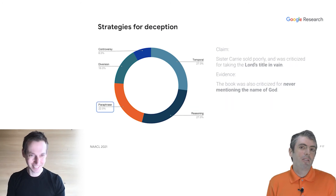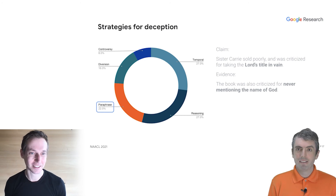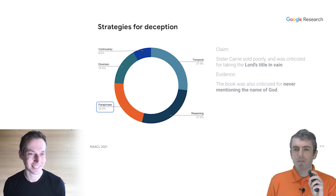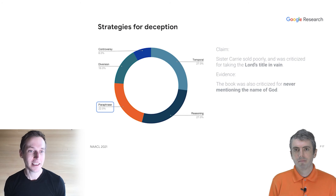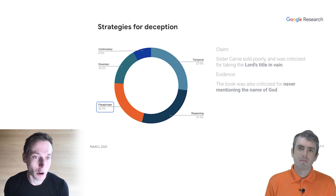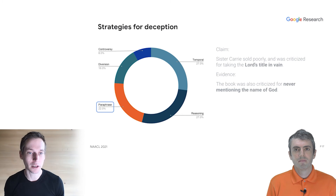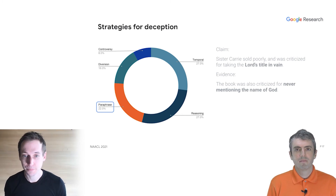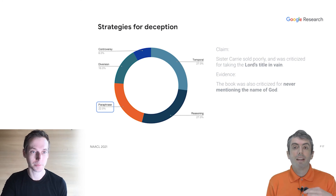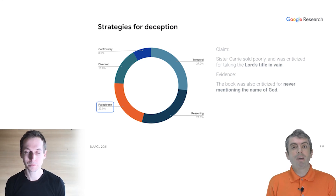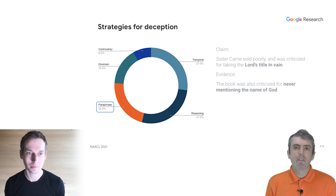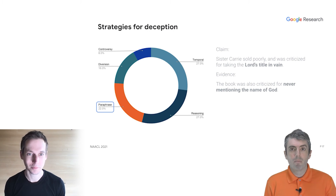Slightly less common at 22% are paraphrases, but in this dataset they're often deployed strategically. Here, 'the Lord's name' is turned into 'the name of God,' which is a reasonable paraphrase — but this paraphrase also brings up the story of how the title of a novel was briefly 'The Flesh and the Spirit,' making it harder for voters. There are other techniques in the paper that are slightly less common, including finding diversions or picking up on controversy in the underlying Wikipedia articles.